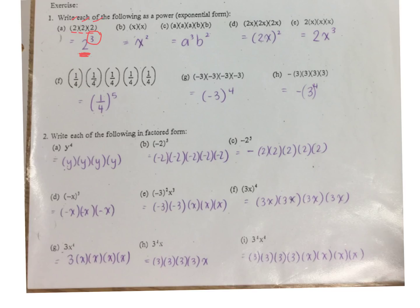Check your answers. There are 2 x's. There are 3 a's and 2 b's. And then I have everything in brackets, so all of 2x to the power of 3. There are 3 of these.